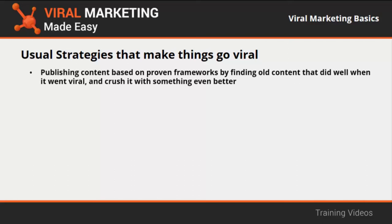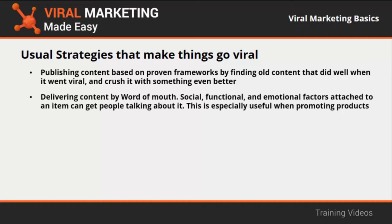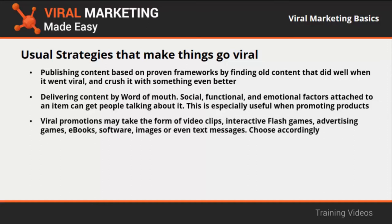Usual strategies that make things go viral include publishing content based on proven frameworks — finding old content that went viral and improving upon it by identifying gaps and filling them with something more relevant. Content can also spread by word of mouth through social, functional, and emotional factors. Viral promotions may take the form of video clips, interactive flash games, advertising games, eBooks, software, images, or text messages.